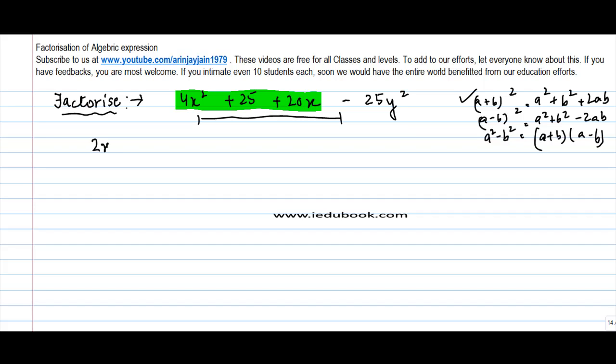4x square can be written as 2x whole square, plus 25 can be written as 5 squared, plus 20x. 20x can be written as what? It can be written as 2 into 2 into 5 into x, right? Or it can be written as 2 into 2x into 5.